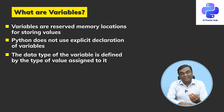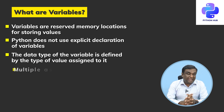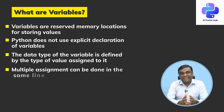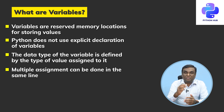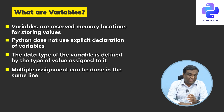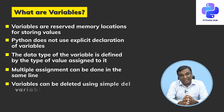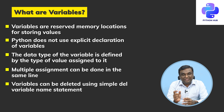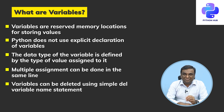If you assign a number the variable takes a number type; if you assign a string the variable becomes a string. Multiple assignments can be done on the same line — for example, x equal to 3 and y equal to a string value in the same line, which Python permits. Variables can also be deleted using the simple instruction: del variable_name. If you say del x, the variable is deleted.